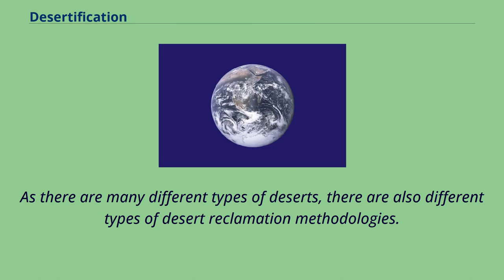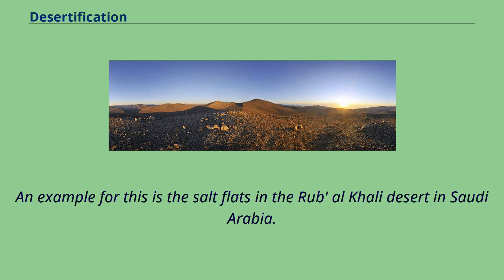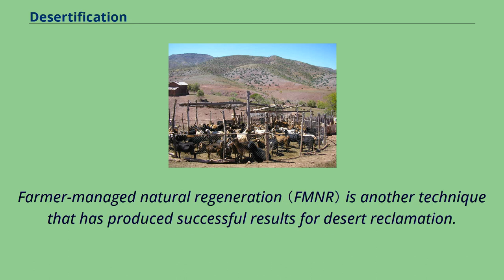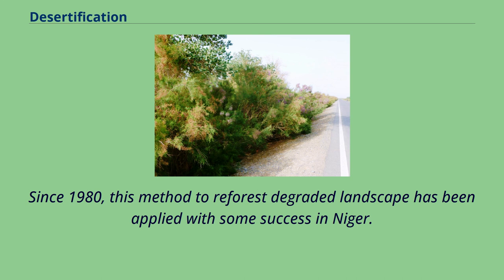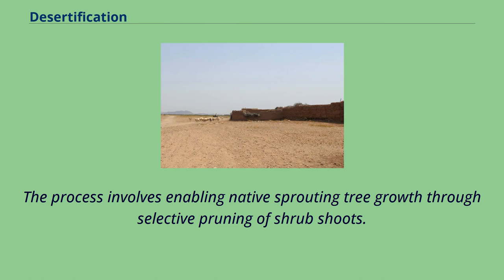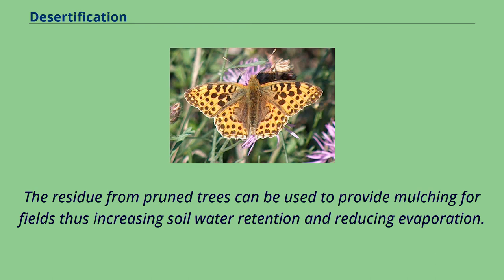As there are many different types of deserts, there are also different types of desert reclamation methodologies. An example is the salt flats in the Rub' al-Khali desert in Saudi Arabia — one of the most promising desert areas for seawater agriculture, which could be revitalized without the use of freshwater or much energy. Farmer-managed natural regeneration is another technique that has produced successful results. Since 1980, this method to reforest degraded landscape has been applied with success in Niger, enabling farmers to regenerate some 30,000 square kilometers. The process involves enabling native sprouting tree growth through selective pruning of shrub shoots, and the residue from pruned trees can be used to provide mulching for fields, increasing soil water retention and reducing evaporation.